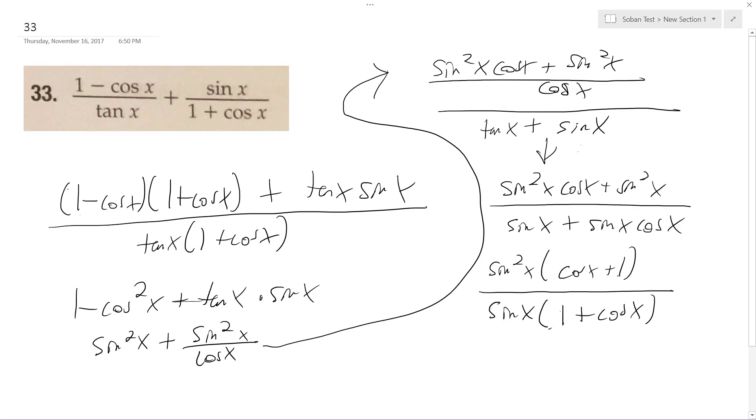These are actually the same, cosine x plus 1, 1 plus cosine x. So these cancel out, and then one of these cancels out this, and I just end up with sine x.